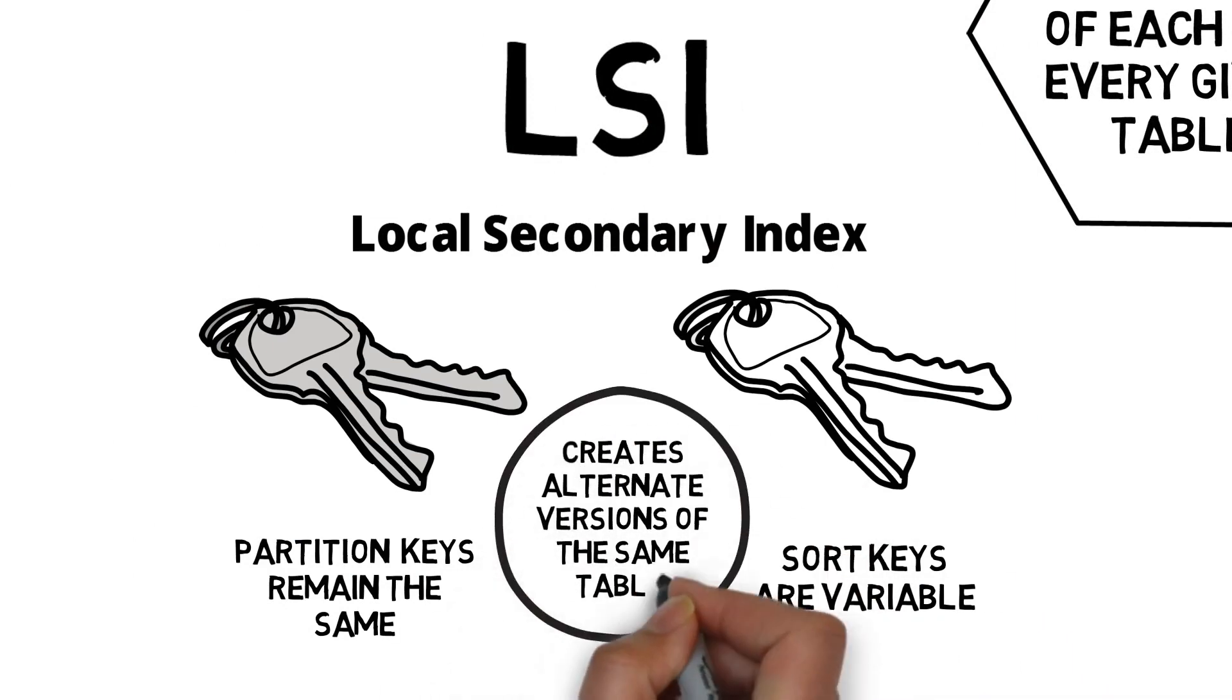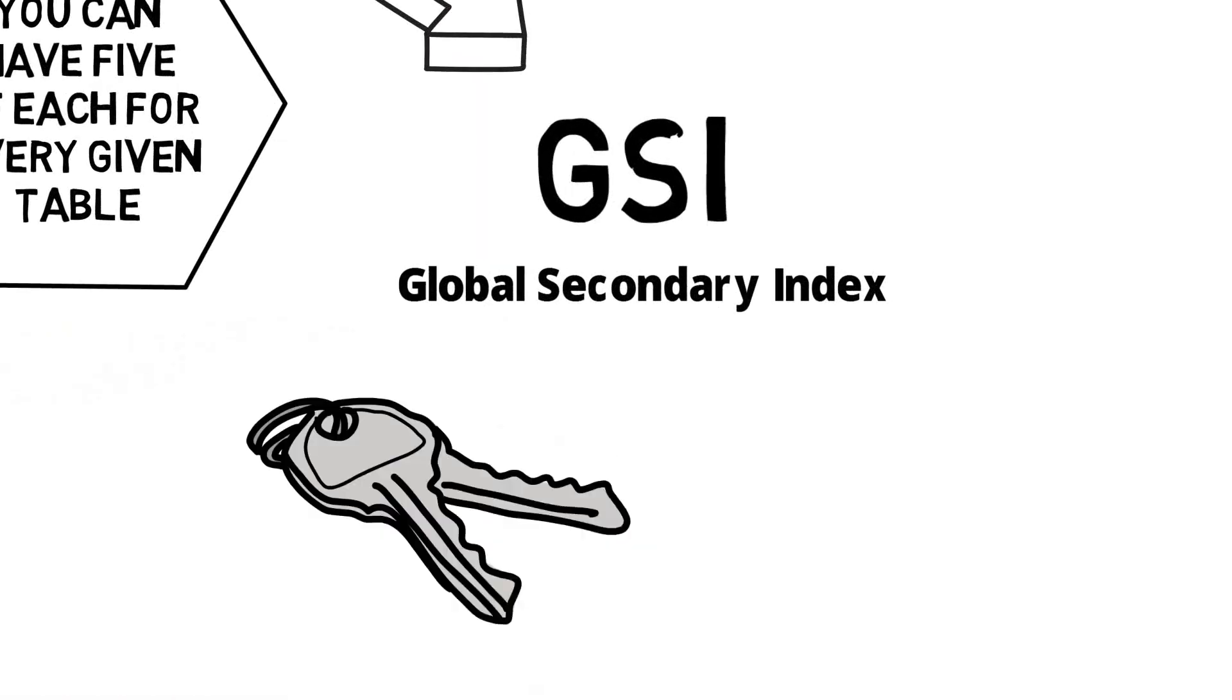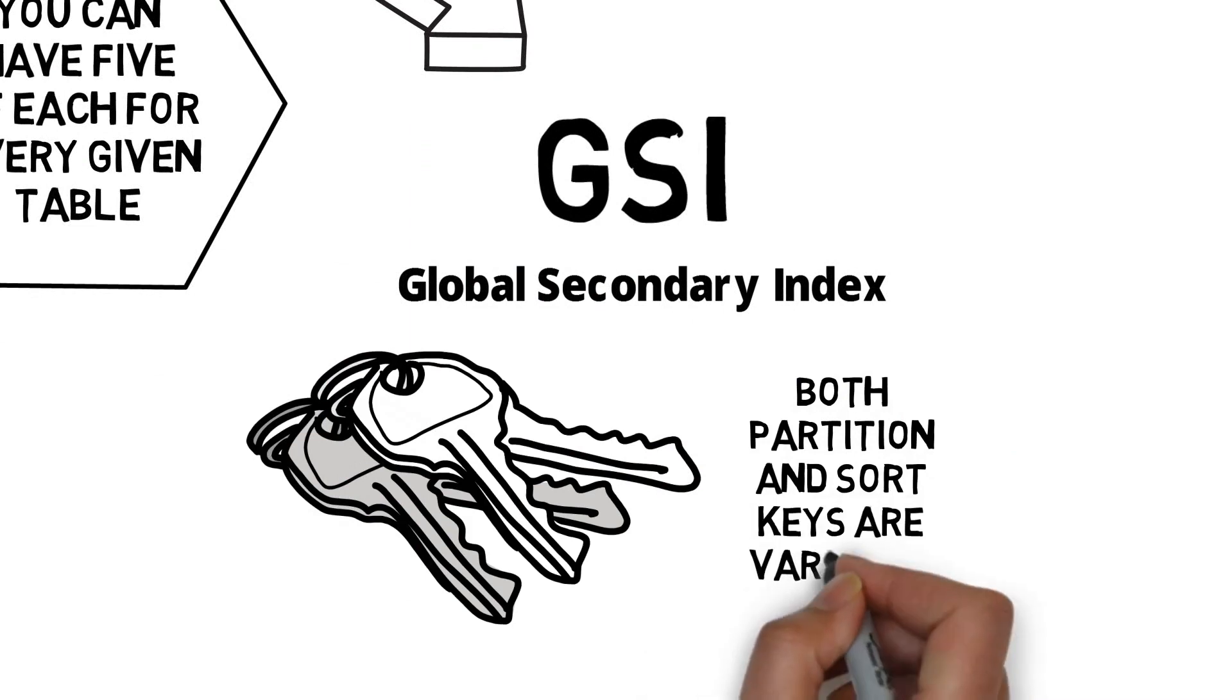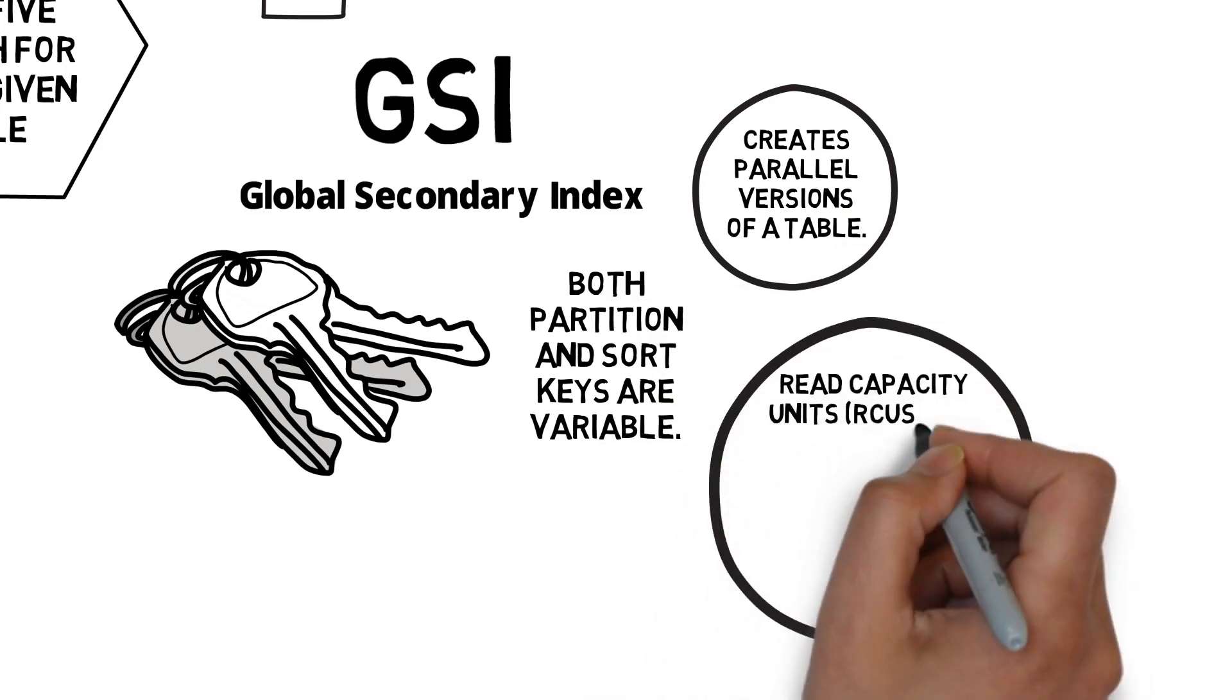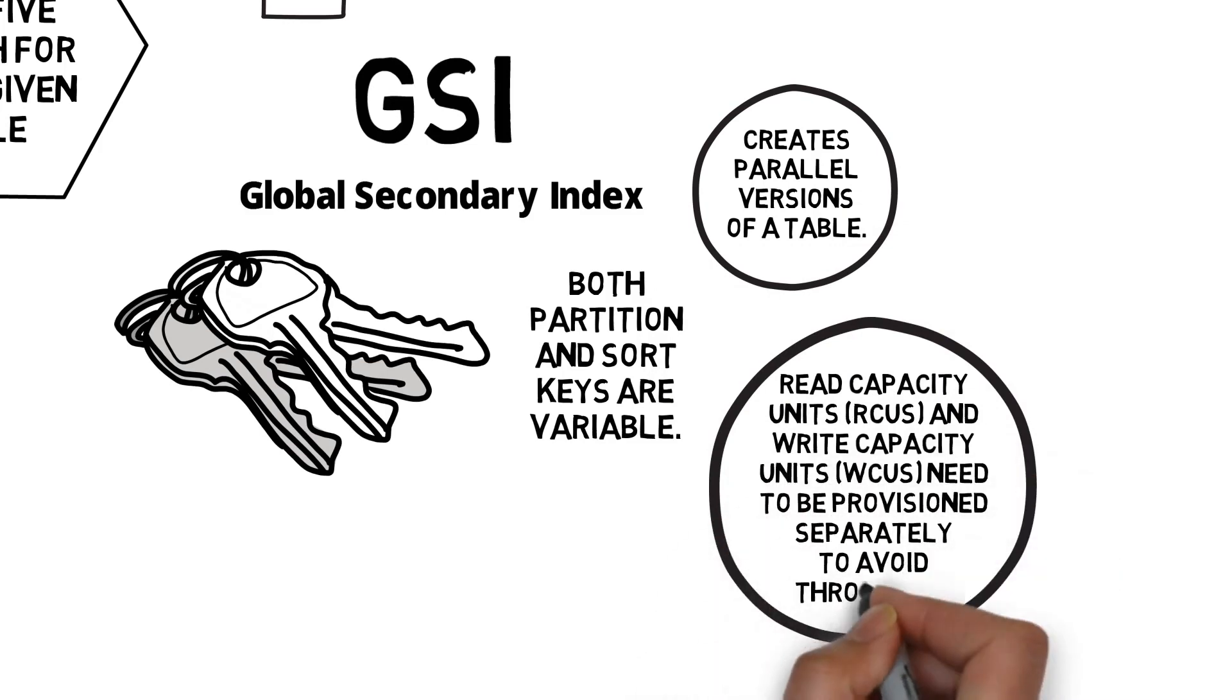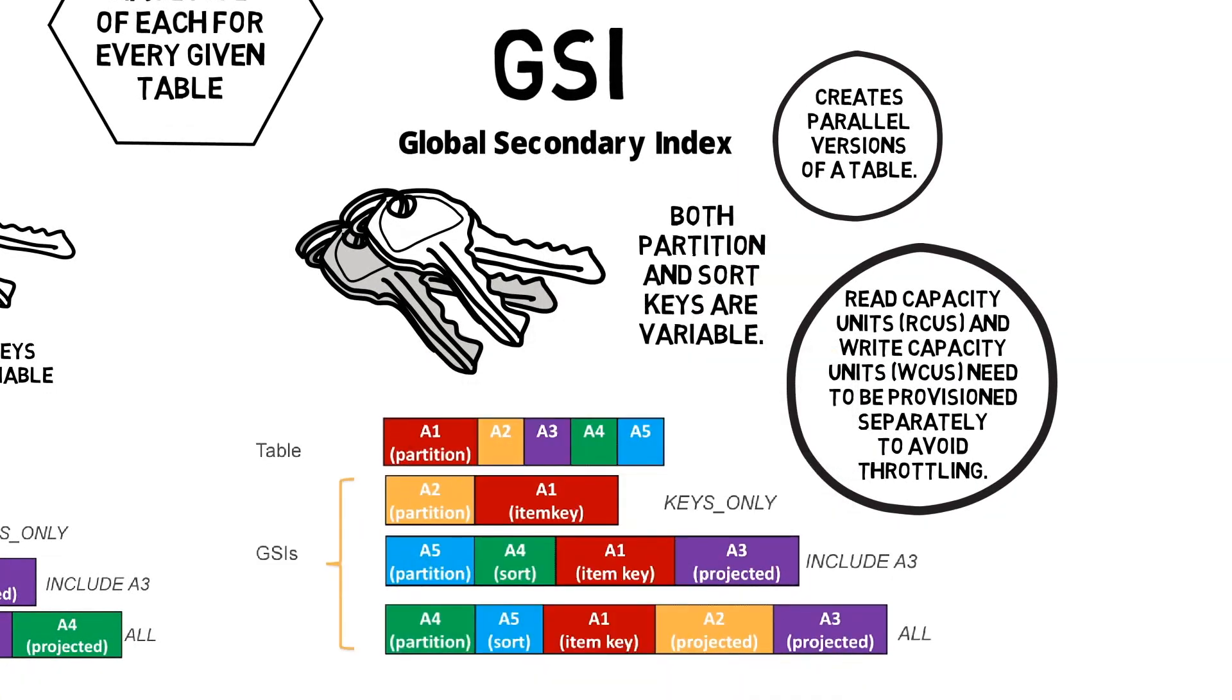Let's talk about global secondary indexes. Both partition and sort keys are variable. They're created in parallel as different versions of a table. The read capacity units and write capacity units need to be provisioned separately to avoid throttling. Those are the key differences.